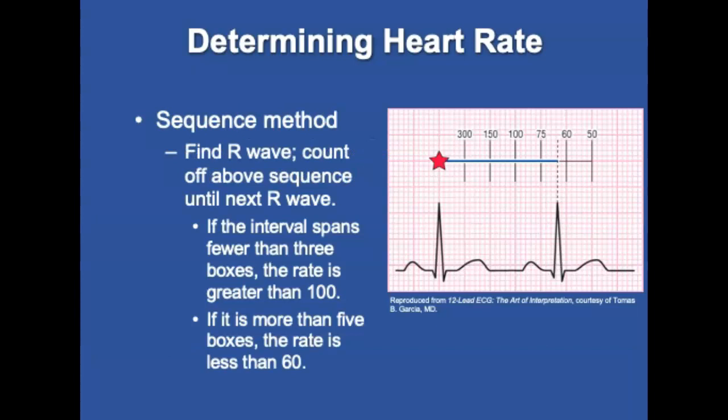The sequence method is reserved for regular rhythms. Memorize the numbers 300, 150, 100, 75, 60, and 50. Find the R wave on a heavy line and count off the above sequence for each large box you land on until you reach the next R wave. If the R-on-R interval spans fewer than three large boxes, the rate is greater than 100 — tachycardia. If more than five large boxes, the rate is less than 60 — bradycardia.